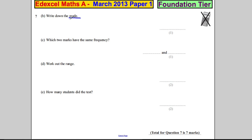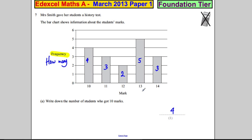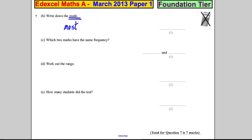Write down the mode. Now, the mode - you should know your mode, mean, median, and range. The mode is the thing that happened the most often. What was the outcome that was most often? Well, 13 marks was the most often. Okay, so 13 marks.